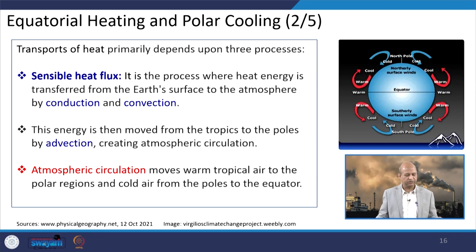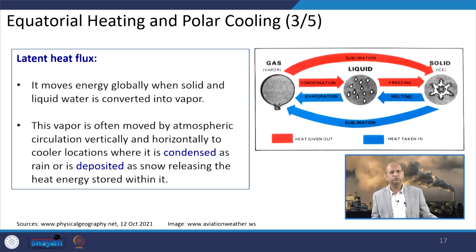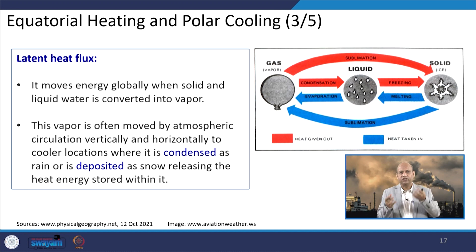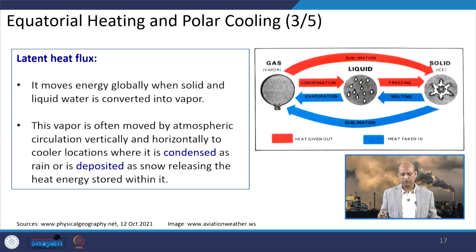The second heat transport process is latent heat flux, which moves energy globally when solid and liquid water is converted into vapour. The heat is latent — hidden — in the water vapour when water evaporates. This vapour is moved by atmospheric circulation vertically and horizontally to cooler locations where it condenses, rains, or is deposited as snow, releasing the heat energy stored within it.